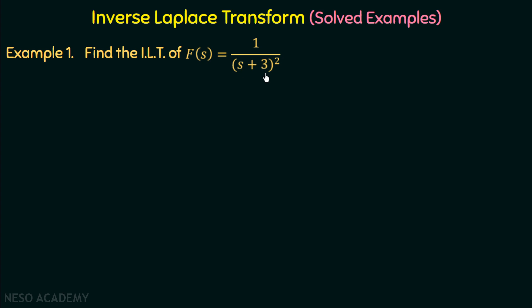There is a shifting in the frequency domain, so there will be multiplication of an exponential function in the time domain by the frequency shifting property. We can find out the time domain function of f using this property. If we know the inverse Laplace transform of 1 over s square, then we can easily calculate the inverse Laplace transform of 1 over (s+3) whole square.